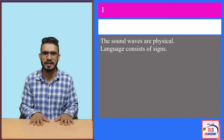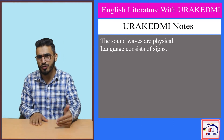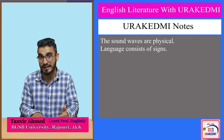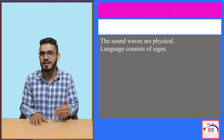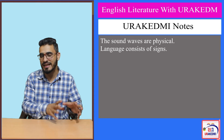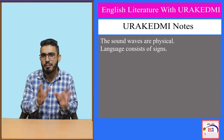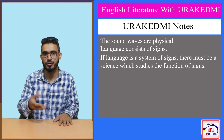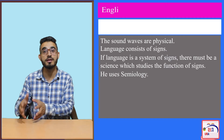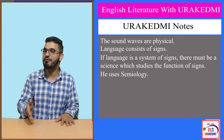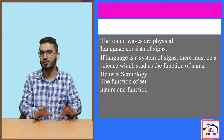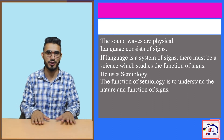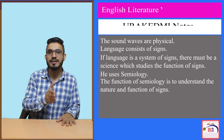He talks about one more thing. Since he reduces language to linguistic structures and then reduces linguistic structures to signs, he says that if language consists of signs and these signs have social unity, there must be a science which studies signs. So he coins semiology — we need a science called semiology, whose function would be to understand the nature and function of signs in our society.